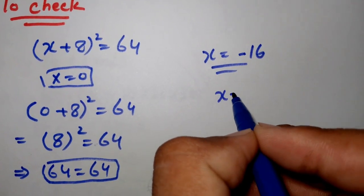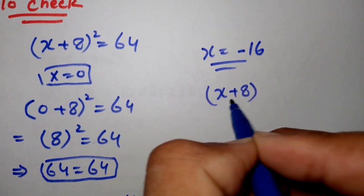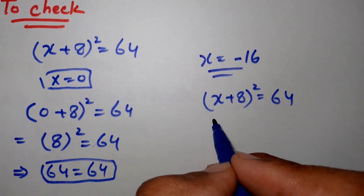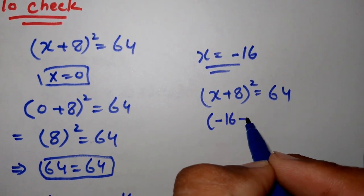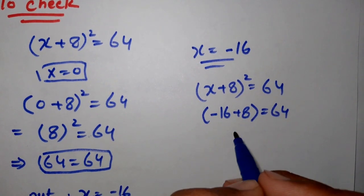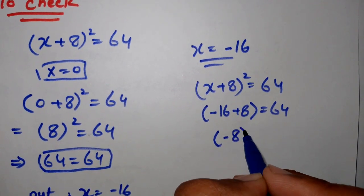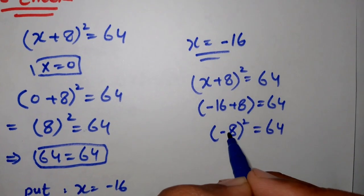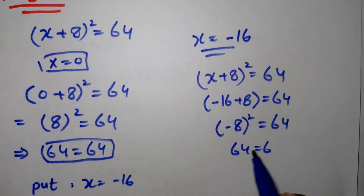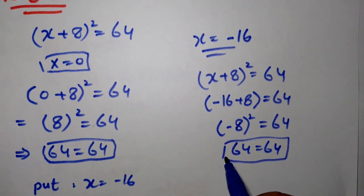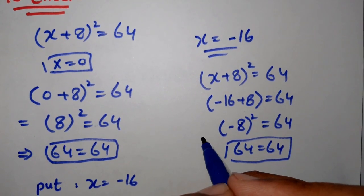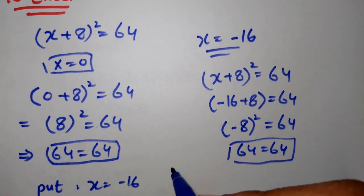Now putting x = -16 into (x + 8)² = 64 gives (-16 + 8)² = 64, and -16 + 8 = -8, so (-8)² = 64, and (-8) × (-8) = 64 = 64. This is also proved. So our answer x = 0 and x = -16 are correct. Thank you for watching.